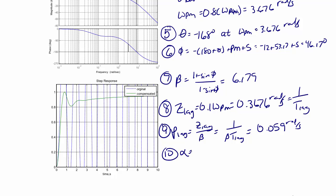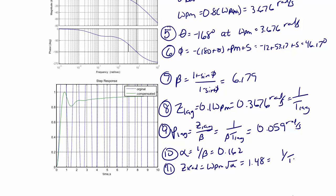Step 10 is to find alpha, which equals 1 over beta, giving 0.162. Step 11 is to find z-lead, which equals omega-pm times the square root of alpha, which is 1.48, also equal to 1 over t-lead. Step 12 is to find p-lead, which equals z-lead over beta, equal to 1 over beta times t-lead, which equals 9.133.